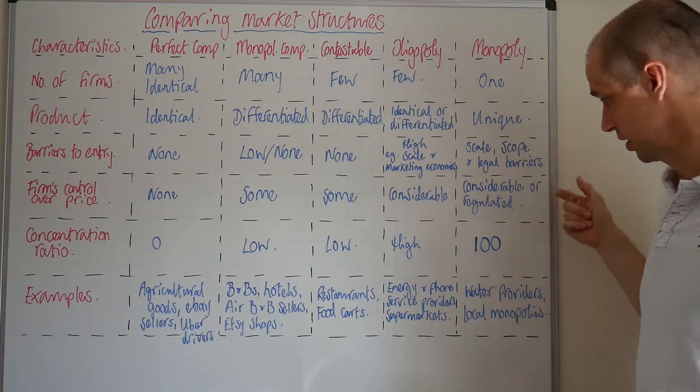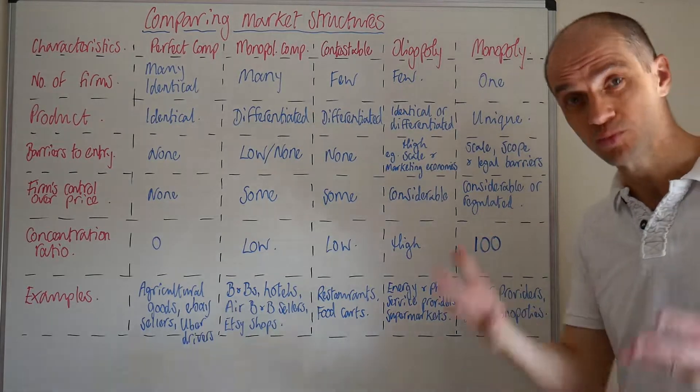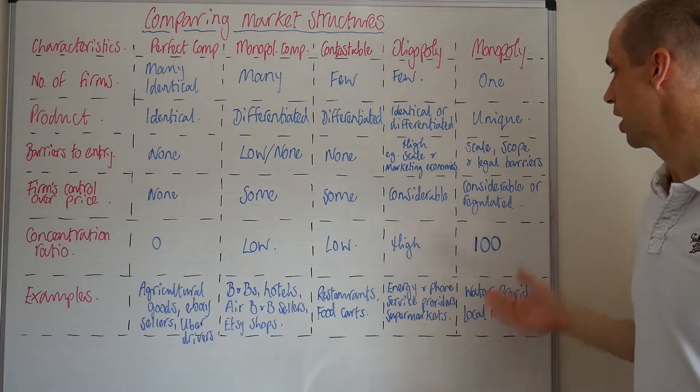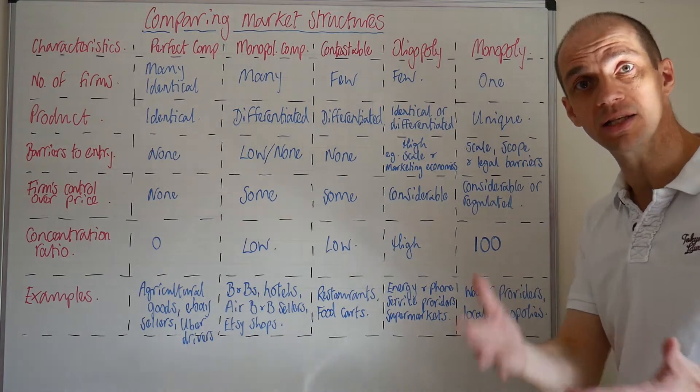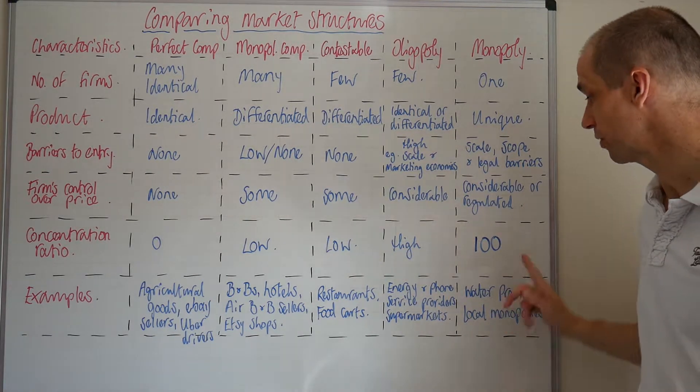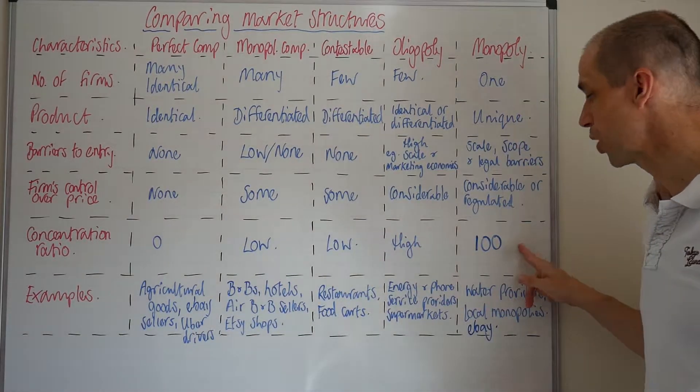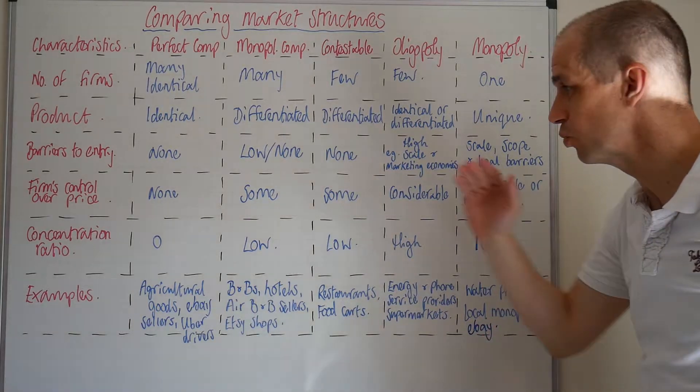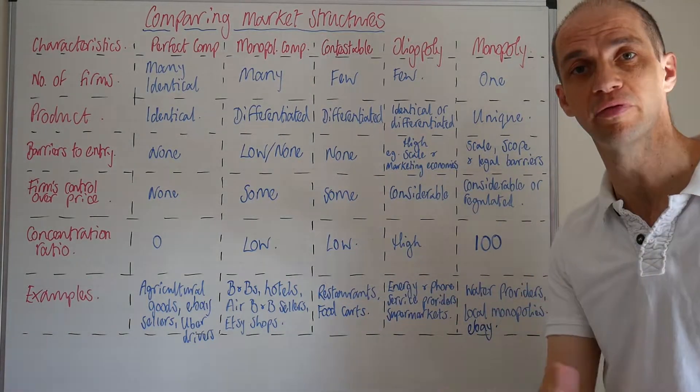So when it comes to the control over price, it's really high. It's a more inelastic demand curve, of course, but it could be regulated by a market regulator. The concentration ratio—well, it's 100% because we've just got one firm here.